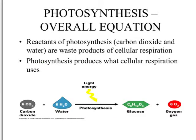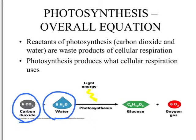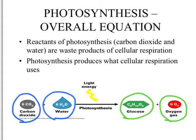Now that we've seen the parts of the plant that carry out photosynthesis, let's look at the actual photosynthetic process. The reactants in photosynthesis are the products from cellular respiration: carbon dioxide and water. The plant uses carbon dioxide and water along with energy from the sun to make the products glucose and oxygen — which are the reactants of cellular respiration. So the photosynthesis reaction and the cellular respiration reaction are the same reaction, just in opposite directions.